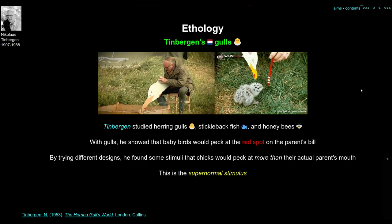The strongest stimulus the chick would peck at was a red and white stripy pole — like a barber's pole — with three white bands and red bands in between. The chick preferred to peck at this red barber's pole over the fake cutout seagull head. Tinbergen called this the supernormal stimulus: a stimulus which is completely unnatural but actually elicits an even stronger response in the chick. The chick has certain instincts to peck at a red spot, but if you make it white and red and stick-like, it pecks even stronger.